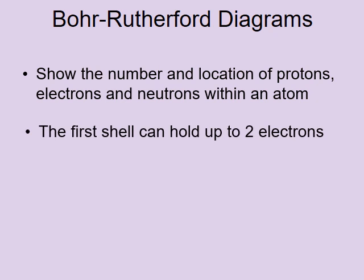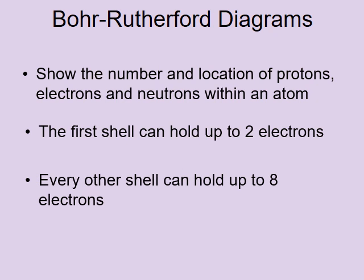There's a couple of rules here. First rule is the first shell can hold up to two electrons. It doesn't have to hold two electrons. It could hold one or zero, but it can hold up to two. And our next rule is that every other shell after that can hold up to eight electrons.